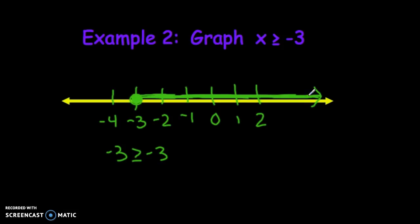Again, if I wanted to check some of those values that are over there, like 0 is bigger than negative 3, true. 2 is bigger than negative 3, true. If I try that one on the left, negative 4 is not bigger than negative 3, so that doesn't work.